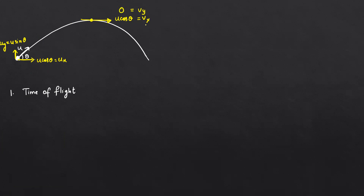Since the tangent at the highest point is purely horizontal, there is no vertical component. I'll divide the path into two parts: rise (ascent) from O to A, and fall (descent) from A to B.